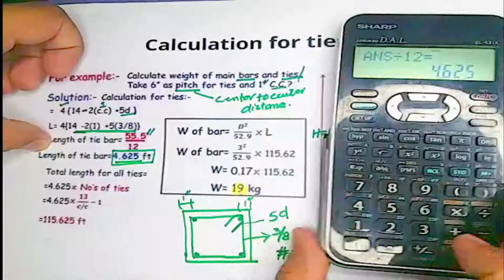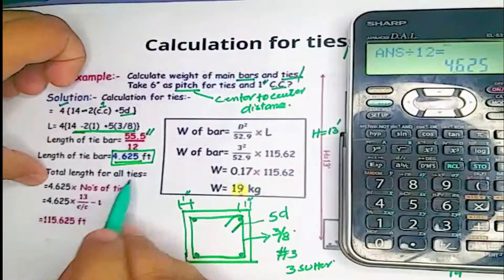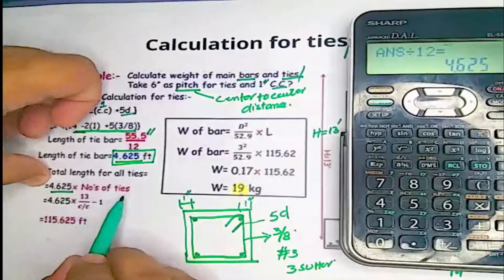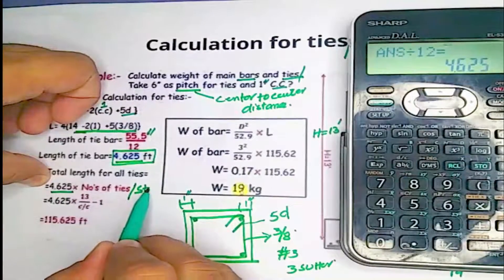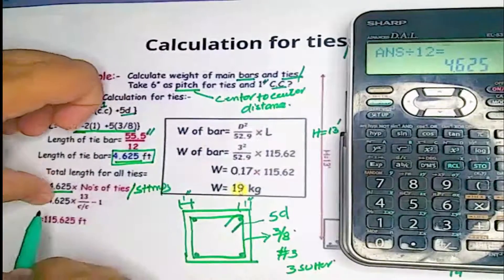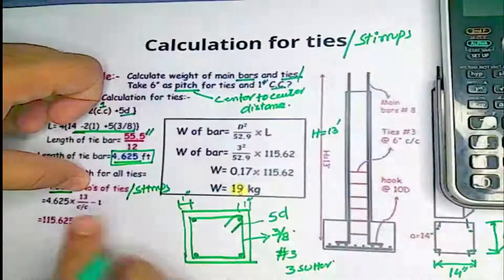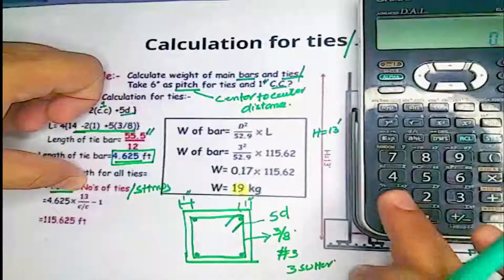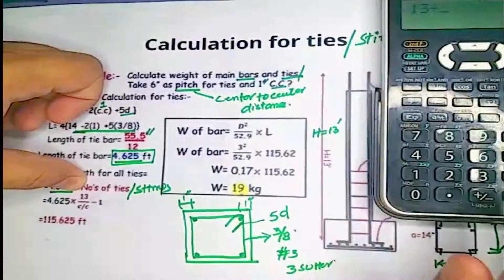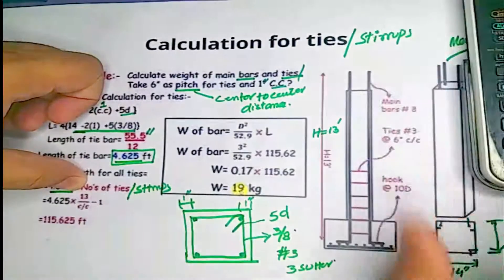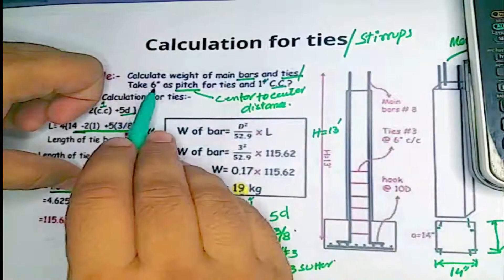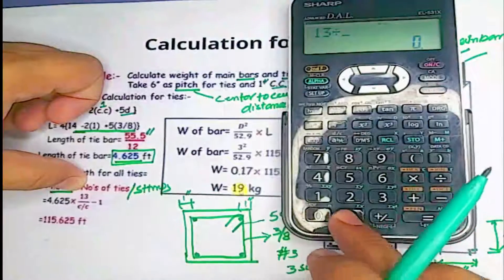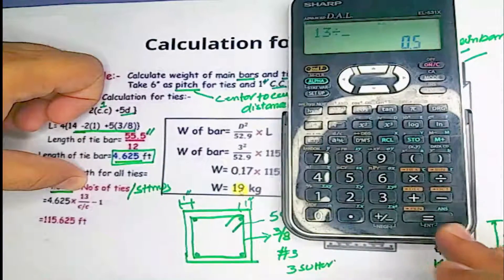Total length of all stirrups equals length of one stirrup multiplied by the number of stirrups. The total height of the column is 13 feet. Dividing 13 feet by the center-to-center pitch of 6 inches (0.5 feet) gives 26 stirrups.